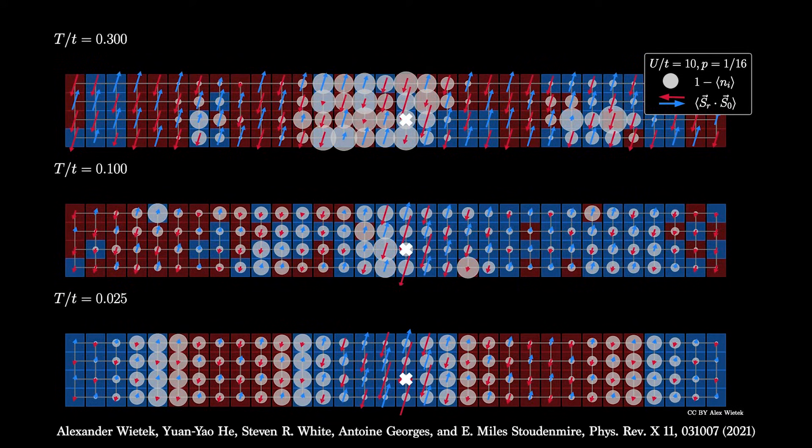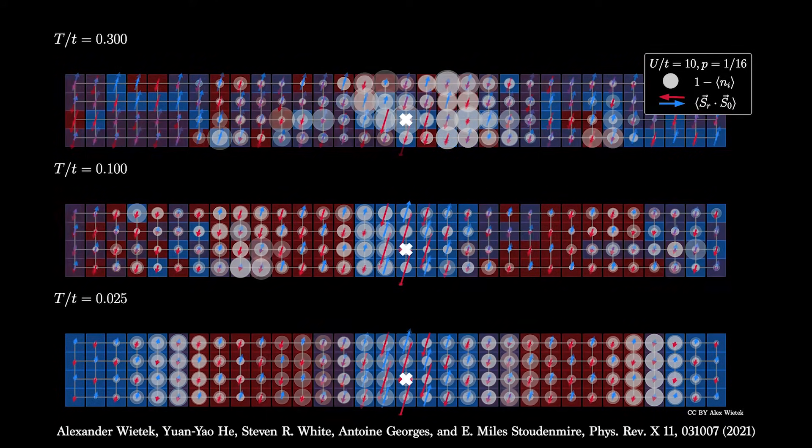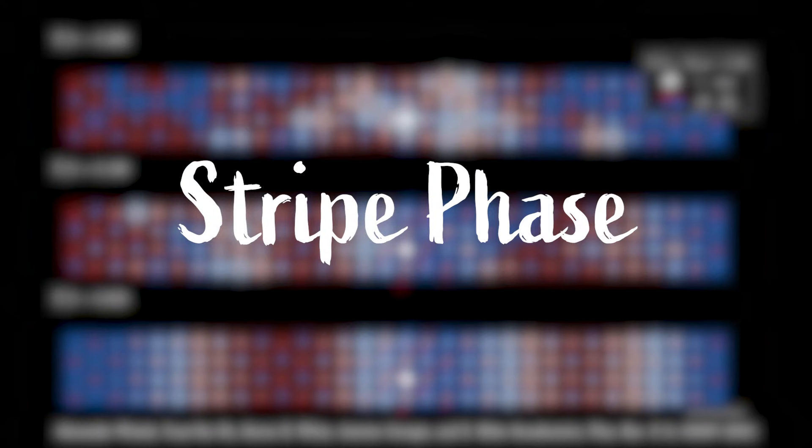When this charge density wave is coupled with the anti-ferromagnetic pattern in the stripes that we just talked about, this is a phase called the stripe phase.